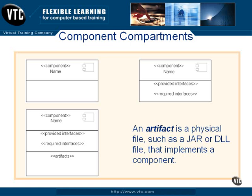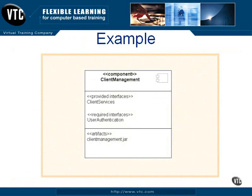Here's an example of what that might look like. Here we have a component called Client Management. It has both provided interfaces and required interfaces, one of each. The provided interface is Client Services, the required interface is User Authentication, and its artifact is ClientManagement.jar. So that fills in the different categories that you can put in the compartments in a component classifier box.